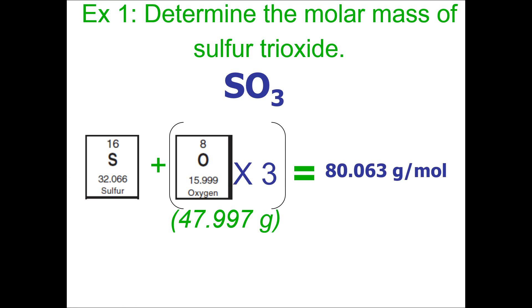As a ratio, which is how we represent our molar masses, our ratio would look like this. It's one mole of SO3 to 80.063 grams of SO3.